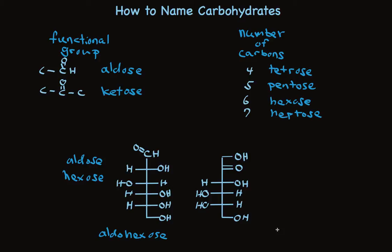The molecule on the right is a ketone, so they'll call it a ketose. And it also has 6 carbons. So it's a ketohexose.